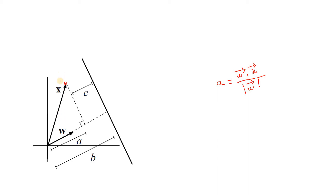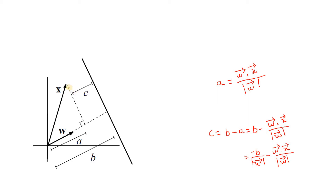We can write A as X-vector dot W-cap, where W-cap is W-vector divided by the magnitude of W. So A can be written as W-vector dot X-vector divided by the magnitude of W. Now C, the distance between the point with position vector X and the hyperplane, is B minus A. B is the distance between the origin and the hyperplane, which is minus B divided by magnitude of omega.